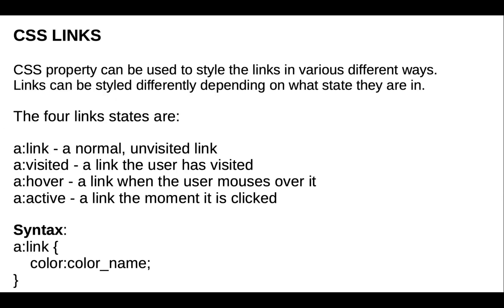Next property is CSS links. CSS properties can be used to style links in various different ways. Links can be styled differently depending on what state they are in. The four link states are: 'a:link' — a normal unvisited link, 'a:visited' — a link the user has visited, 'a:hover' — when the user's mouse is over it, and 'a:active' — the moment a link is clicked.